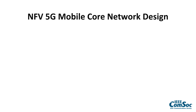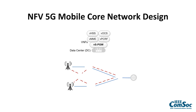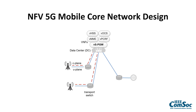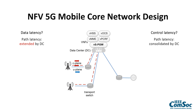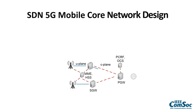First, let's make a comparison between an NFV and SDN mobile core network design. With NFV, network functions are deployed as virtual network functions on a mobile cloud platform, and transport switches are used to carry the control and data plane from the field to the cloud. From a performance perspective, data and control latency are highly impacted by the location of the data center, and from a cost perspective, there is extra cost to handle the data plane in the data center.